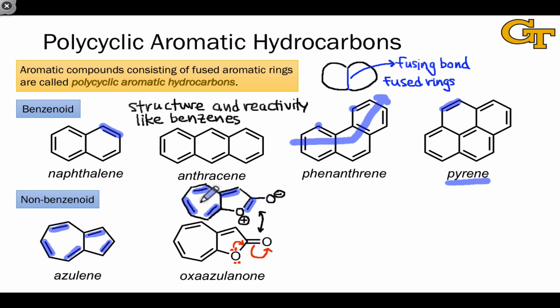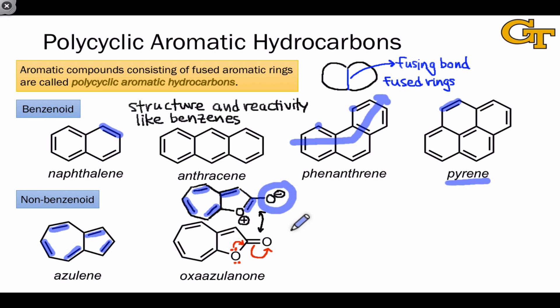The fact that this resonance structure appears aromatic indicates that it's probably very important to the overall structure of this molecule. The importance of this resonance structure gives us structural insights. For example, since this resonance form is aromatic, we might expect this oxygen to be more negative than the oxygen of a simpler non-aromatic ester, such as ethyl acetate or a plain alkyl ester.